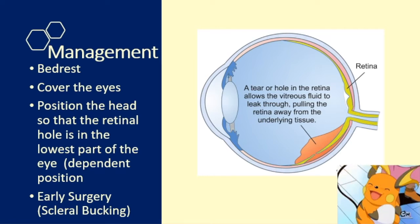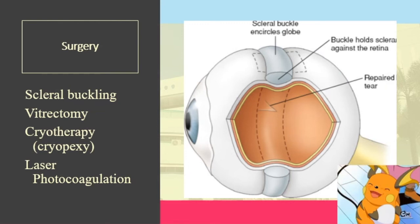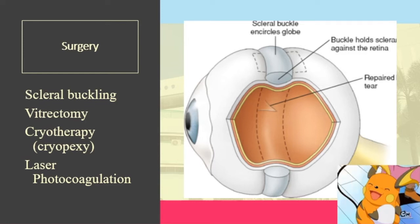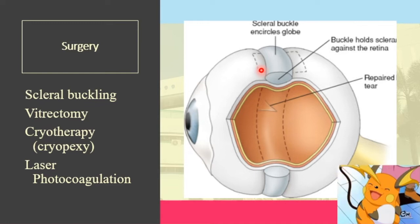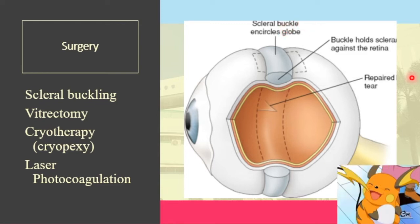Surgical options include scleral buckling, vitrectomy, cryotherapy or cryopexy, and laser photocoagulation. In scleral buckling, the retinal surgeon compresses the sclera using a scleral buckle or silicone band. The purpose is to indent the scleral wall from the outside of the eye and bring the two retinal layers into contact with each other — essentially placing a little pressure on the sclera so the two retinal layers are again in contact.